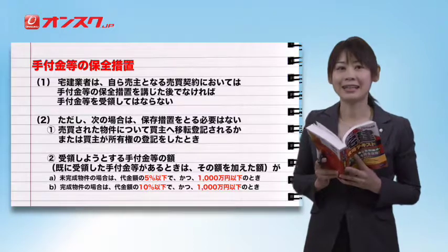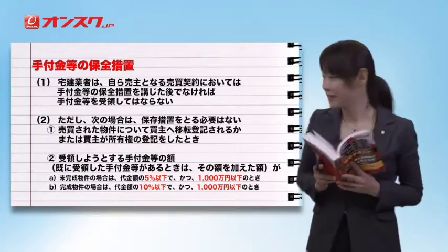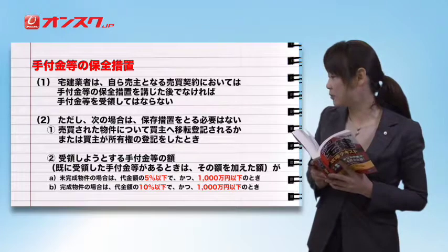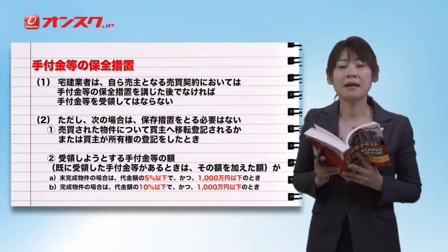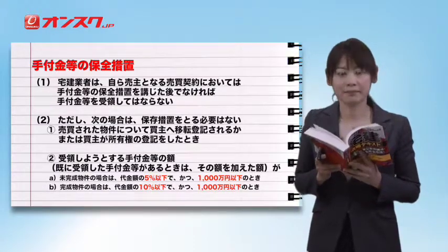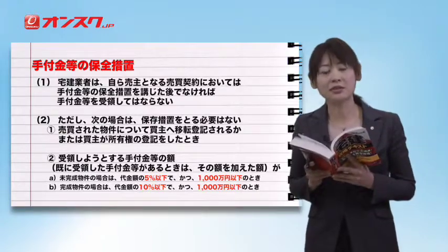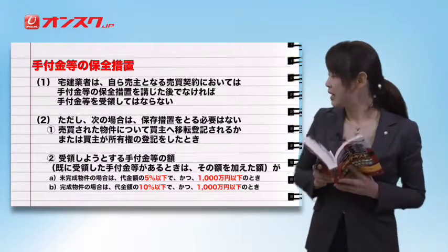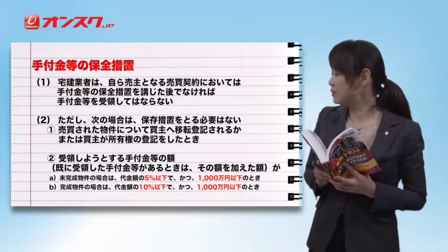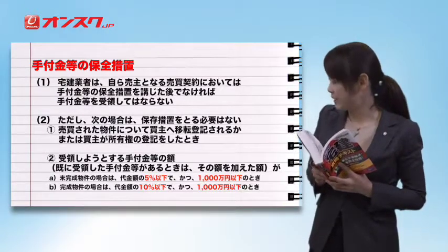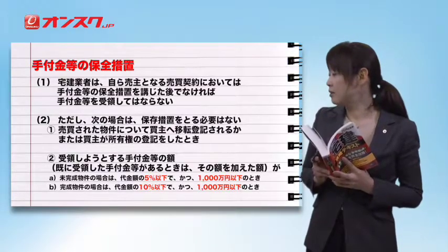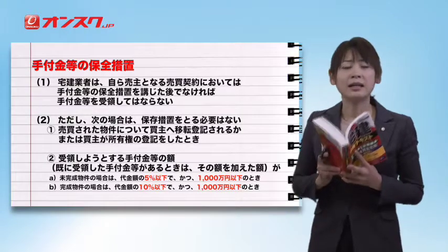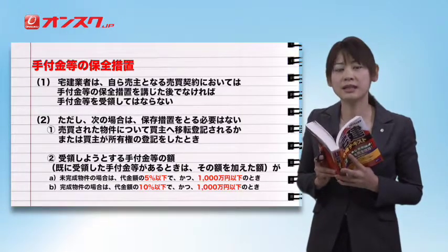①の場合、買い主へ所有権移転登記がされた、または買い主が新築などで所有権の保存登記をした場合、買い主はもう登記を備えていますので誰に対しても不動産の所有権を主張することができ、手付金の保全措置がなくても不利益がありません。②の規定は、手付金の額が売買代金に比べてそれほど高くない場合に全て保全措置をするとすると宅建業者の負担も非常に重くなるためです。未完成物件の方が保全措置の規定が重くなっているのは、未完成物件の方が手付金を返してもらえない危険性が高いからです。